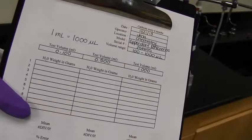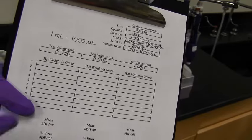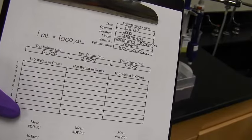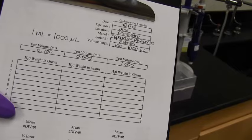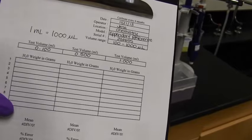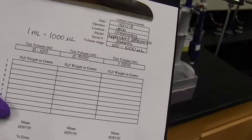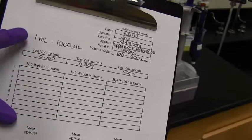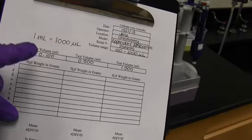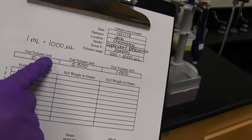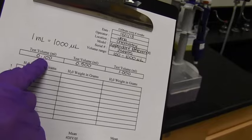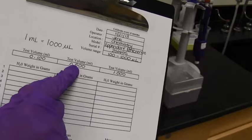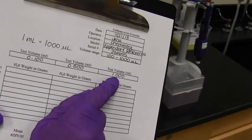Before we start actually taking some measurements, we're going to fill out our form first. Basic things that you'll need is the date, who's doing the calibration, what location the pipetter came from, the model number, which is located on the pipetter. For example, we're doing the Eppendorf reference. The serial number, which is on the top right near the knob where you change the volume. The volume range of the pipette, which is also on the knob. This one is 100 to 1000 microliters. I also put a conversion up here. So we know one mil is 1000 microliters. For this particular form, the test volume needs to be a milliliter. So I already went ahead and converted it. So the 100 microliters is going to be 0.1 milliliters and so forth. This one's going to be 0.5 milliliters. This one is 1 milliliter, which is 1000 microliters.